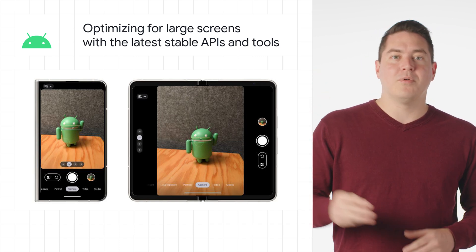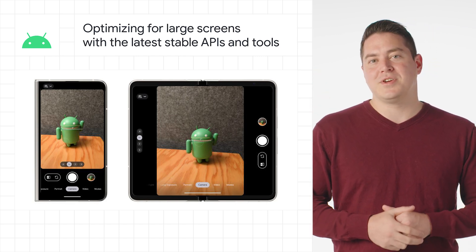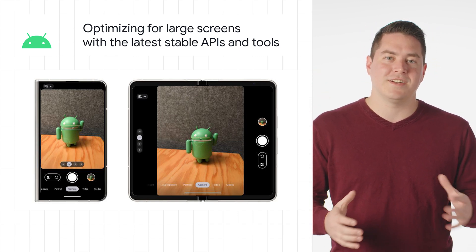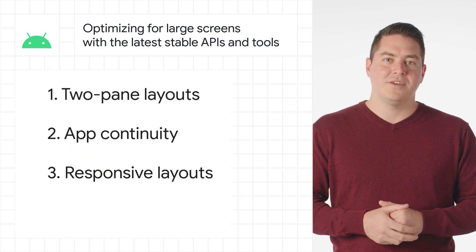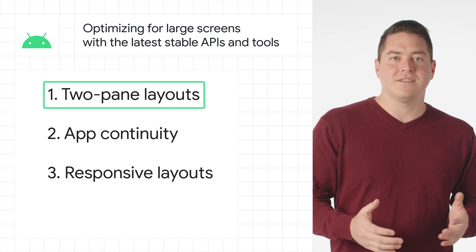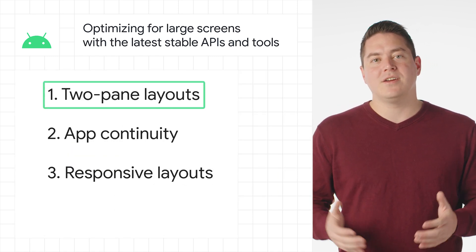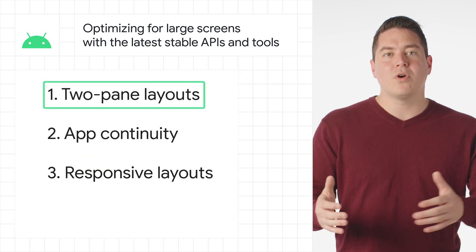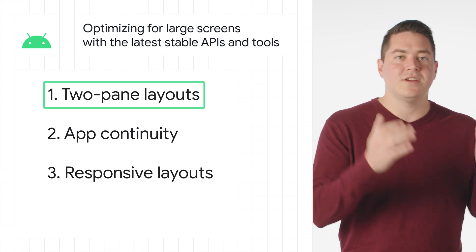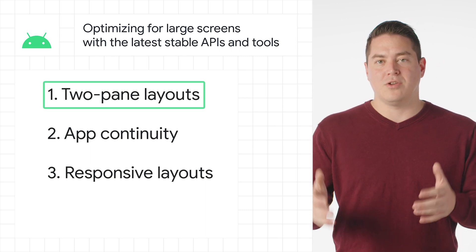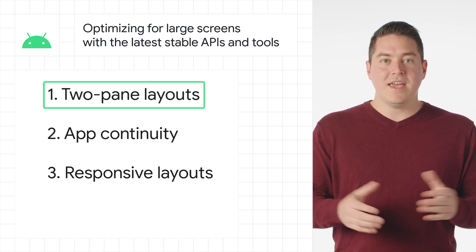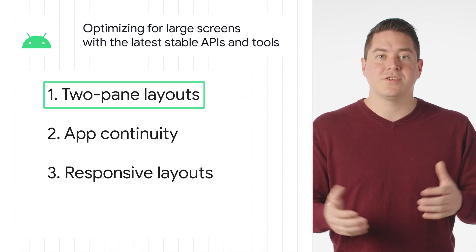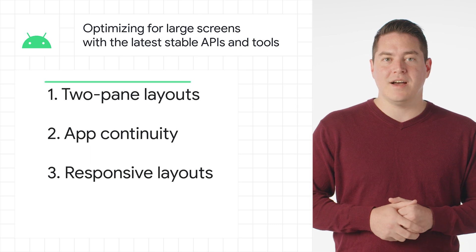There are three important design principles you can follow to make the most of large screens on Android. There are two-pane layouts to display content across two columns, showing you more content across the unfolded, larger screen, and allows you to do more without extra taps or losing context.